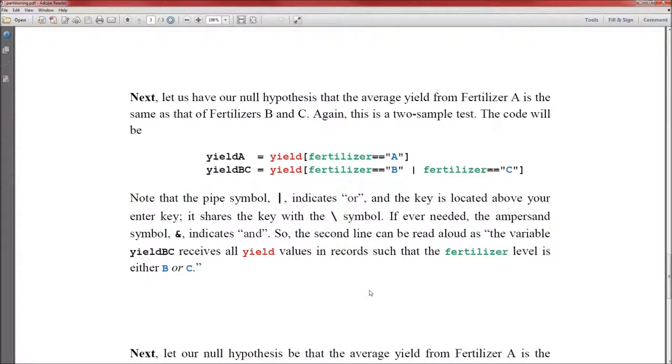Perhaps we don't want to compare A to all the others. Perhaps we want to compare the yield of fertilizer A to the yield of fertilizers B and C put together. Here's how you would do that. First line is the same because it's just yield of A. We're going to call the second one yieldBC. Yield, fertilizer, level, and that's a pipe, it's a vertical line located just above the enter. It means OR. Fertilizer C. So what the second line does is it looks for all those fertilizers that are B OR fertilizers that are C. And for every one of those, it takes the yield value and sticks it in the variable yieldBC.